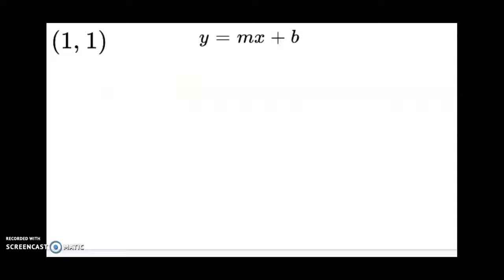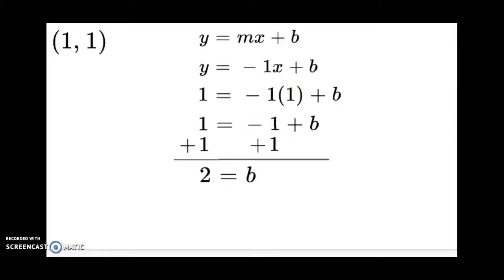Okay, so I'm going to substitute in negative 1 as my slope, and then now I'm going to substitute in 1, 1, for x and y. Negative 1 times 1 is negative 1. Add 1 to both sides, and my y-intercept is going to be 2.